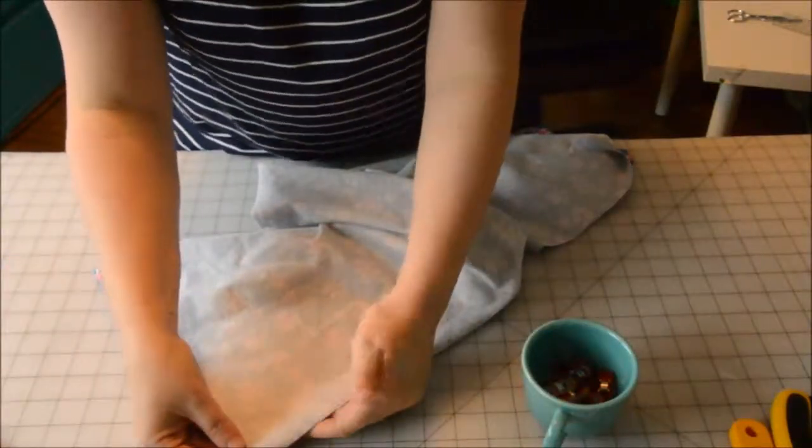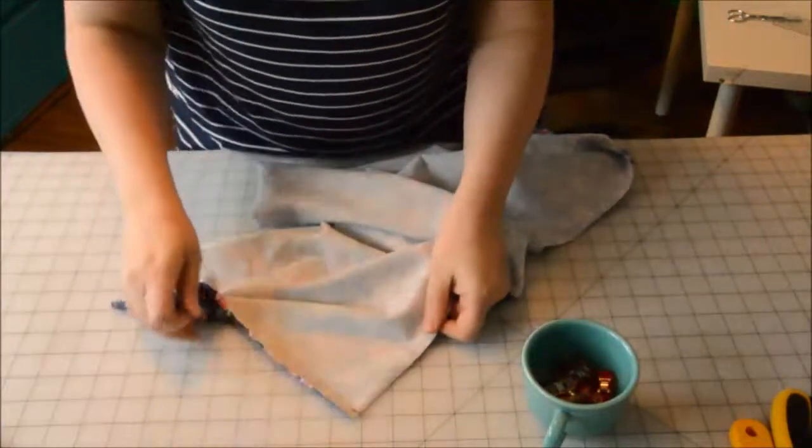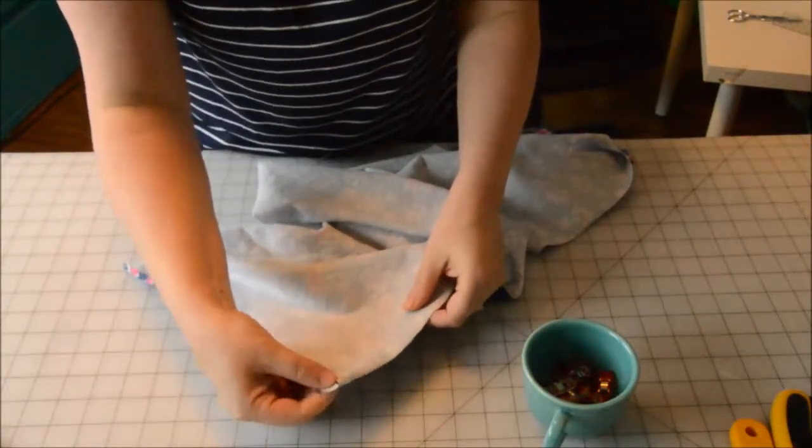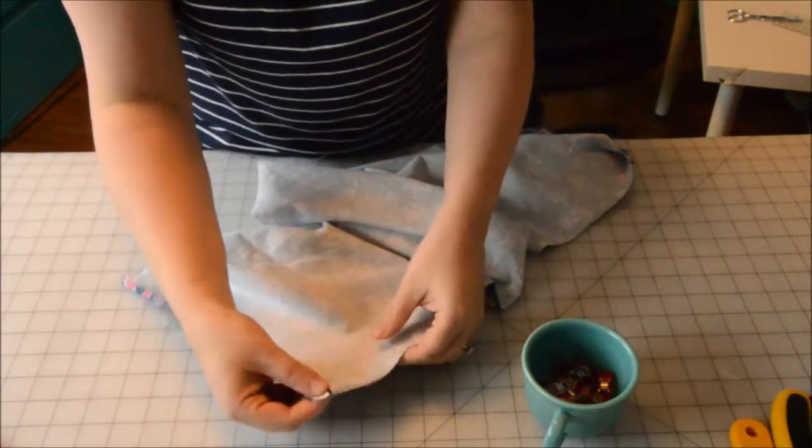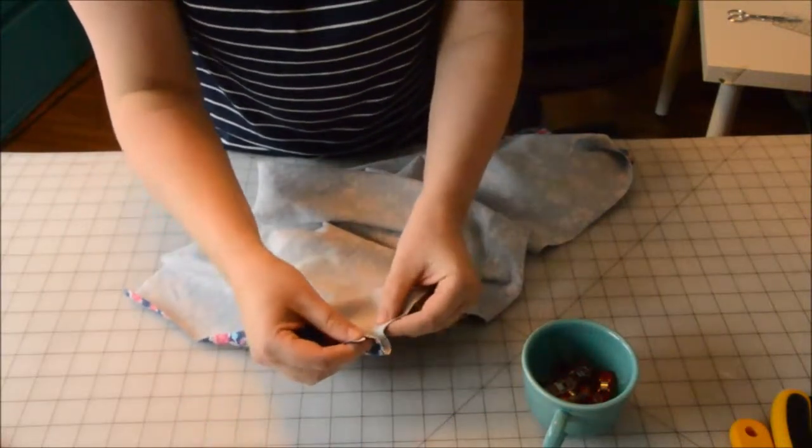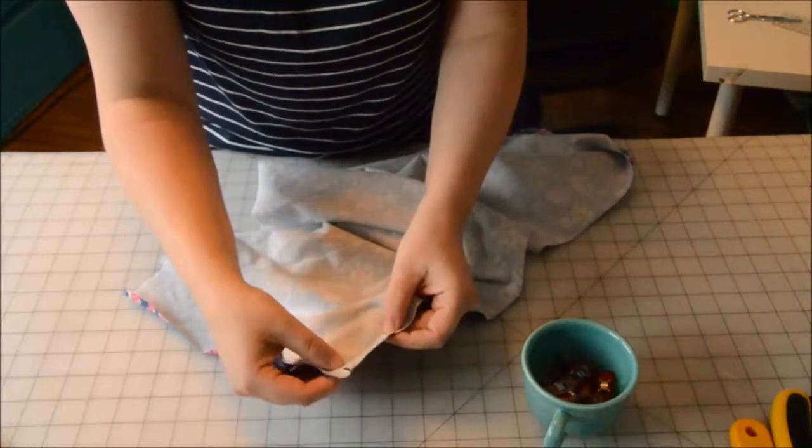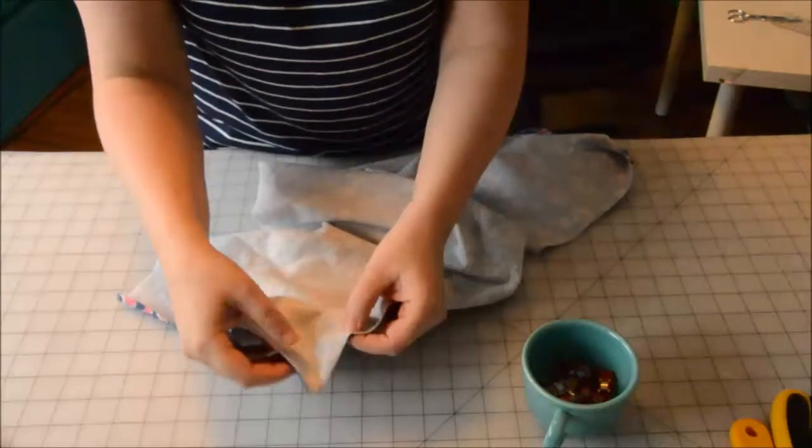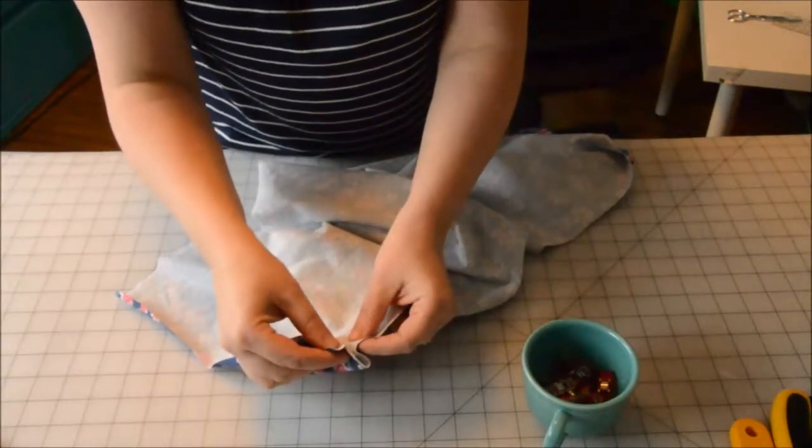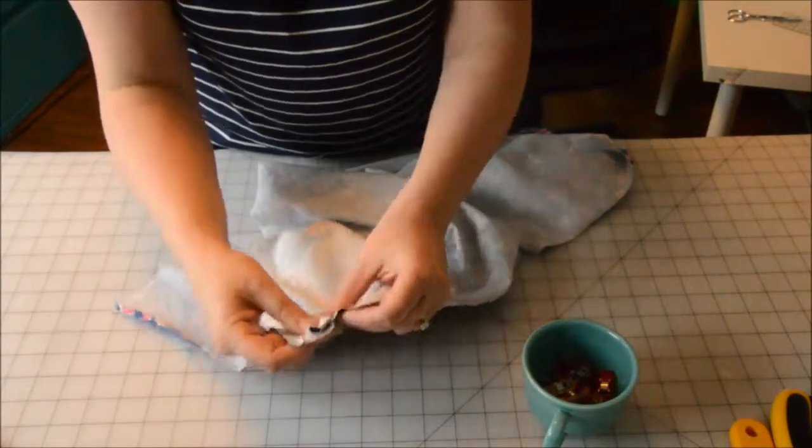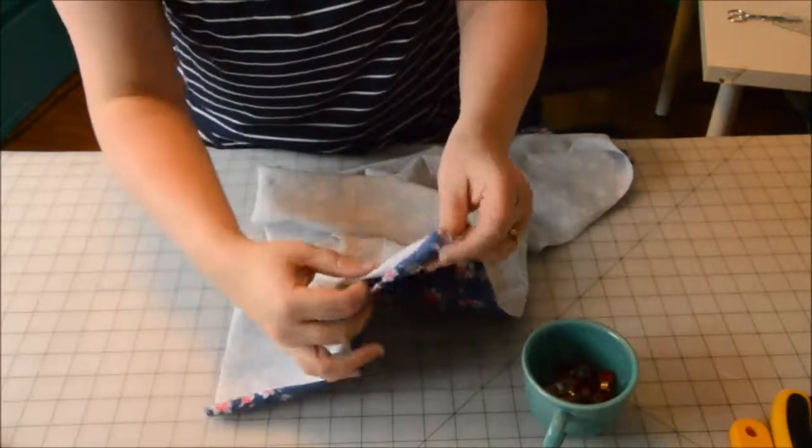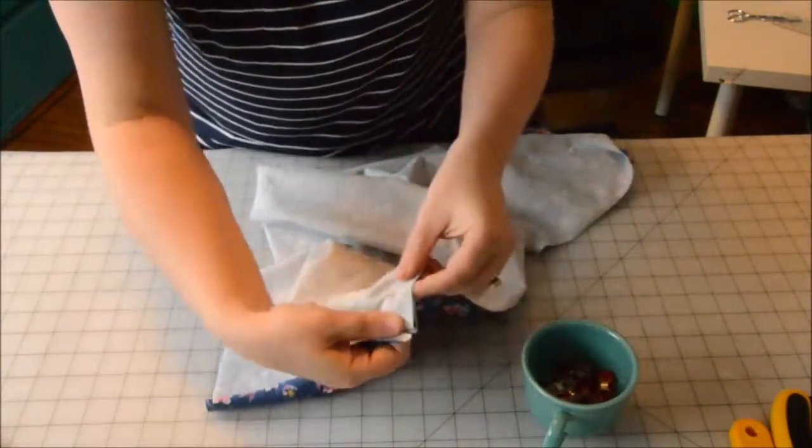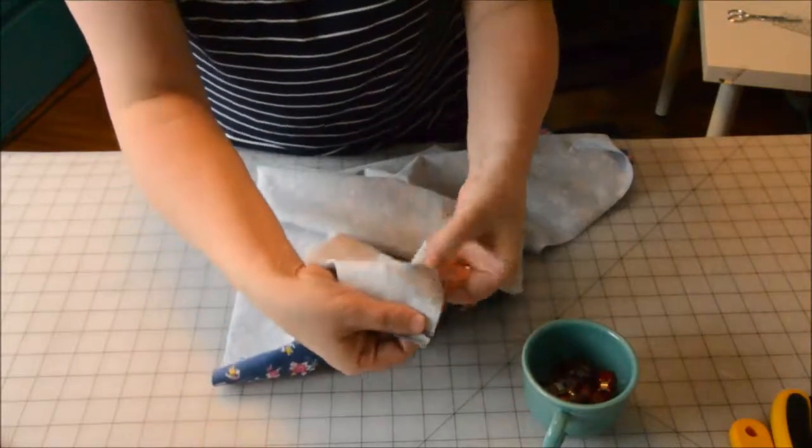So we are going to make our first pleat, starting from one side seam. We're going to match up the first solid line to the dotted line. In my case, I made my solid lines red with a marking pen, and blue for the dotted inside lines. So we're going to make that fold. And then you'll notice, when we make that fold, the pleat matches up to the next red line.